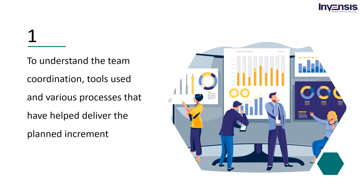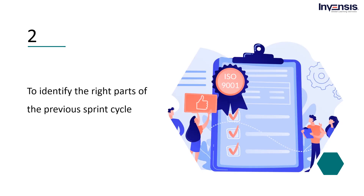These issues are addressed to make sure that mistakes or roadblocks do not occur in the future, and to make improvements in the upcoming cycles. This does not mean that one can blame anyone, but as a team it is necessary to learn how to avoid risks for the next sprint. Next, the scrum master must identify the right parts of the previous sprint cycle. As much as he or she can highlight what went wrong, it is important to understand how the results of the planned cycle turned out. This helps the team with morale and also reinforces scrum's key values and principles.